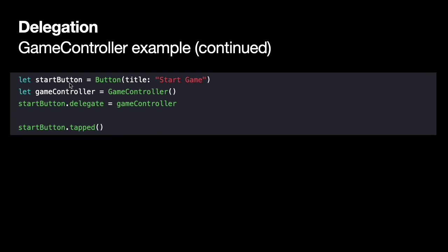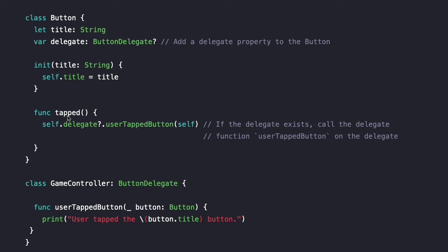Here's an example of using the button. We create a Start button and a game controller, then set the button's delegate to be the game controller. When we call the tapped method on the button, it sends the message to its delegate — the game controller. The userTappedButton method is called, prints that the user tapped the button, and since the button passed itself as the parameter, the controller can look up the button's title and include it in the printout.